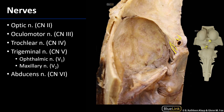Cranial nerve 4, the trochlear nerve, is just adjacent to the oculomotor nerve as it moves through the wall of the cavernous sinus. Cranial nerve 5, the trigeminal nerve, is located on the brainstem model and has three divisions: V1 goes through the superior orbital fissure, V2 through foramen rotundum, and V3 through foramen ovale.